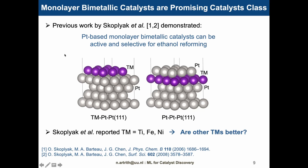They investigated two types of catalyst models. In the first case, shown on the left, a transition metal monolayer is deposited on top of the platinum(111) surface. In the second case, another monolayer of platinum is deposited on the transition metal layer. The group reported the activities and selectivities, for example, for titanium, iron, and nickel. So could it be that a transition metal makes better catalysts?